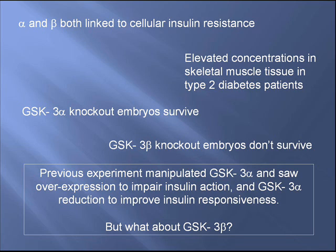Elevated concentrations of GSK3 are found in the skeletal muscle tissue of those with poorly managed type 2 diabetes. Previous experiments have investigated the feasibility of knocking out either form of GSK3 at the fetal stage and discovered that GSK3 beta is essential whereas GSK3 alpha isn't. This group's previous experiment observed the effects of alpha manipulation on glucose metabolism and insulin resistance, and this paper reports on a repeat experiment manipulating the beta form of GSK3.